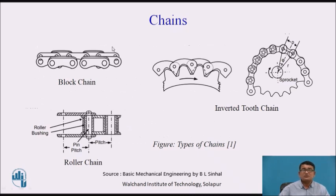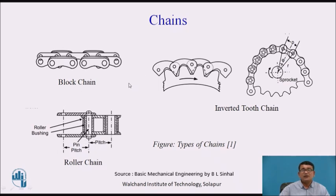These are some diagrams showing block chains, inverted tooth chains, and roller chains. These have lower bushings and the distance between the pins is called the pitch. A simple everyday example of a chain is a bicycle chain.